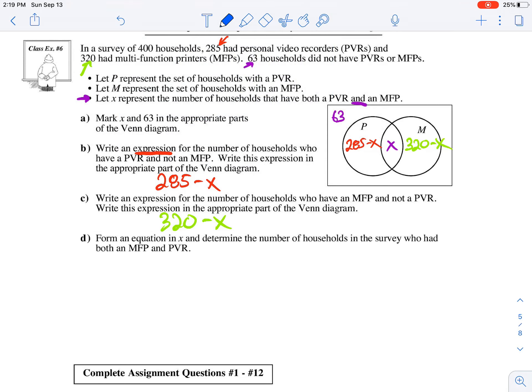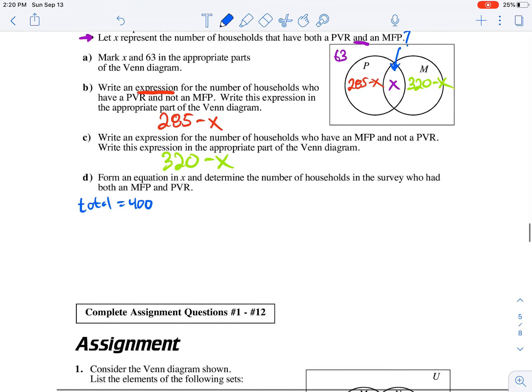And now for part D, we need to form an equation in X and determine the number of households in the survey who had both an MFP and a PVR. So this is what we're looking for. What does that equal? Somehow we have to build an equation using all the information that we see here to be able to solve for X. So there's one bit of information that we haven't quite used: the total number of households equals 400.